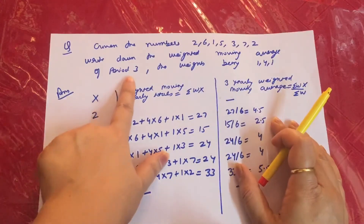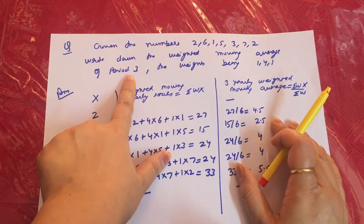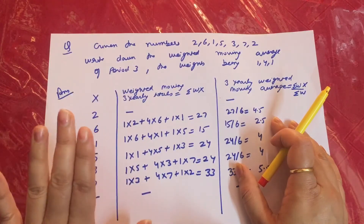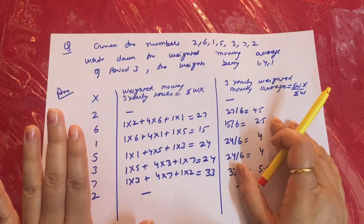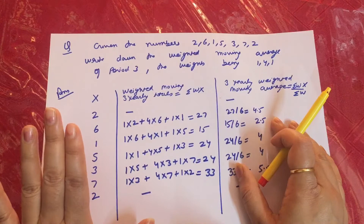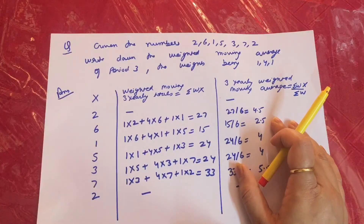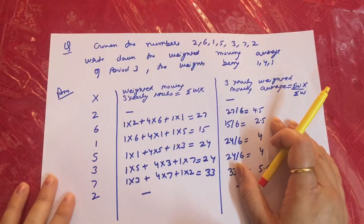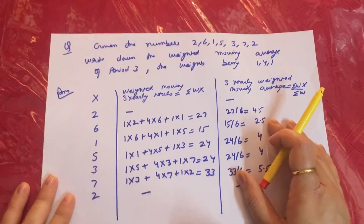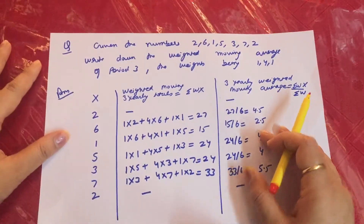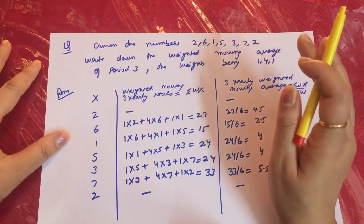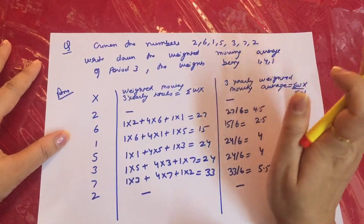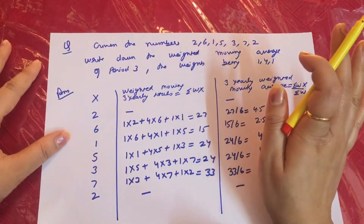If you remember, for the weighted moving average of period 3 we use 3-yearly grouping. In simple moving average the formula used to be A plus B plus C divided by 3, then B plus C plus D divided by 3. We left the first value and placed the result against the mid-value.